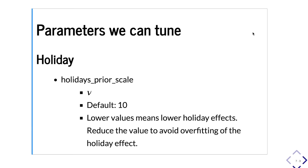For holidays, we can tune the holidays prior scale. The default value is 10. Lower values mean lower holiday effects, and reducing the value can avoid overfitting. If you think you have strong holiday effects, you can increase the value. If you think the holiday effects might be overfitting or should be smaller, you can reduce the value.